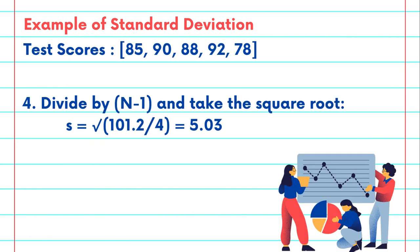The last step will be to divide by n minus 1 and to take the square root of that answer. Since this is a sample with 5 data points, n minus 1 will be equal to 4. So here you can see that we're taking the square root of 101.2 over 4. Once we complete this calculation we can see that the standard deviation for this sample of test scores is approximately 5.03.